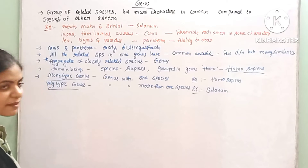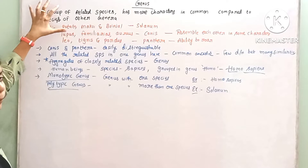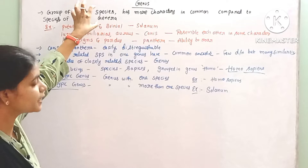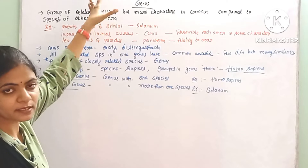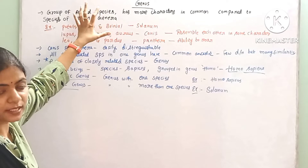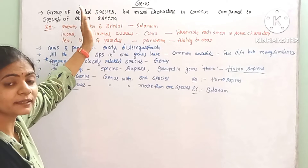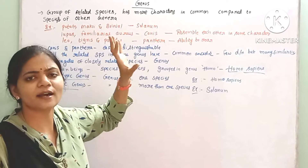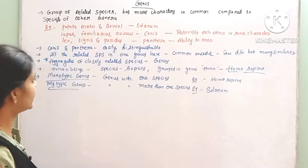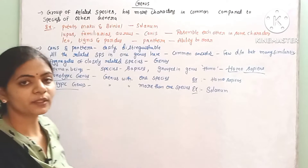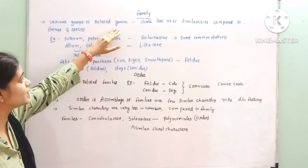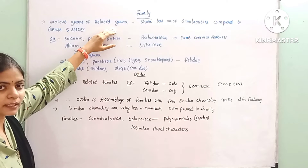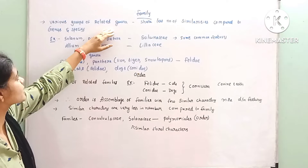So this is about genus — a group of related species. Within a genus, species share common characters, but compared to another genus the common characters differ. Next, groups of related genera form the next category.